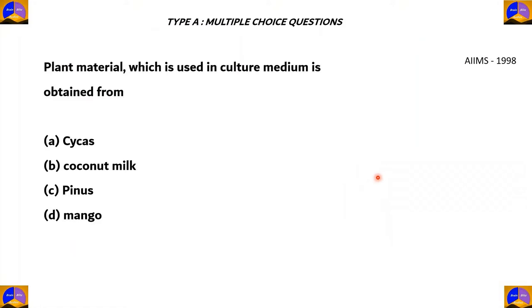Here's your first question. Plant material which is used in culture medium is obtained from: A. Cycas, B. Coconut milk, C. Pinus, and D. Mango.